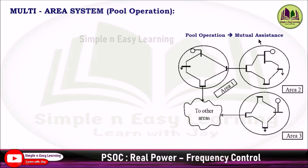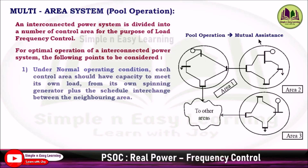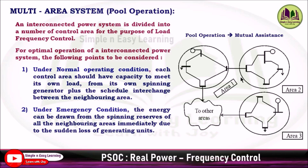Pool operation is a mutual assistance between control areas. They can support nearby control areas in case of any emergency and critical conditions. For optimal operation of an interconnected power system, under normal operating conditions, each control area should have the capacity to meet its own load from its own spinning generators plus the scheduled interchange between neighboring areas. In case of emergency, energy can be drawn from the spinning reserves of all neighboring areas immediately due to sudden loss of generating units.